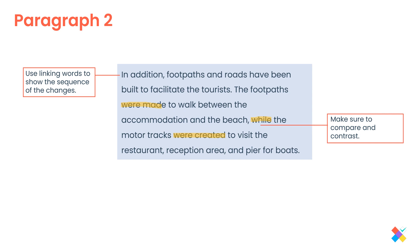The more specific changes should be included in your main body paragraphs — anything like what has been constructed, the time frame, and so on. It's also very important to know how to describe locations, as you'll be expected to describe where things are on the map and where changes have occurred. You should use 'to the left,' 'to the right,' or compass directions: north, south, east, west — you can draw the symbols on the question paper. Also use prepositions of place: at, in, on, by, beside, to, of, off, from — to describe where things are.